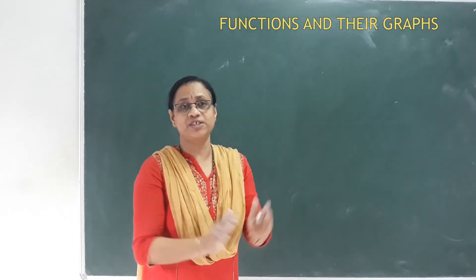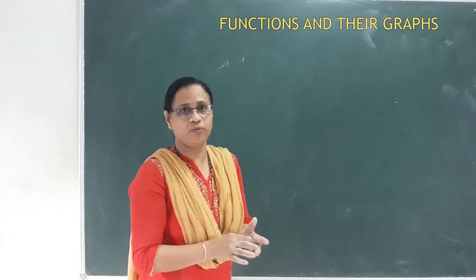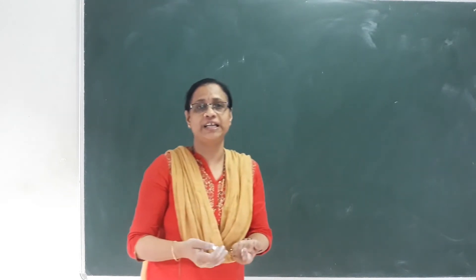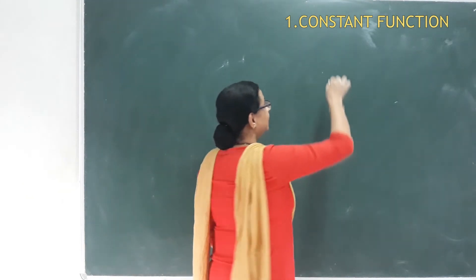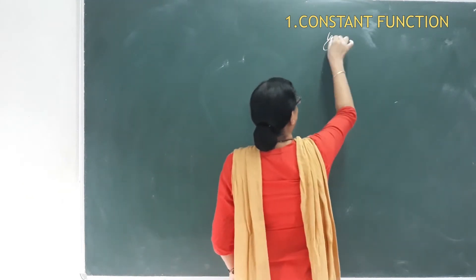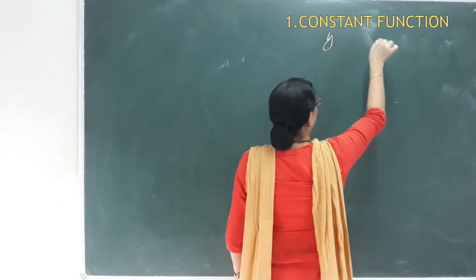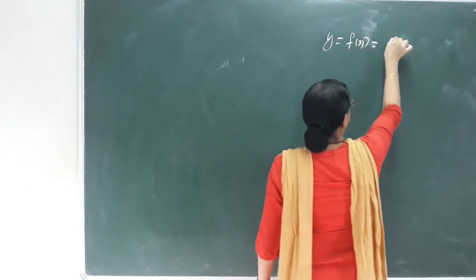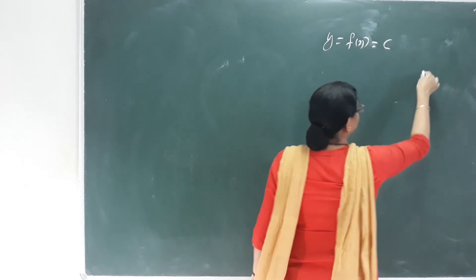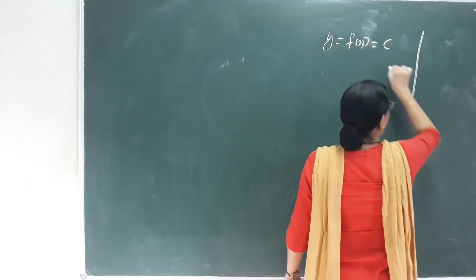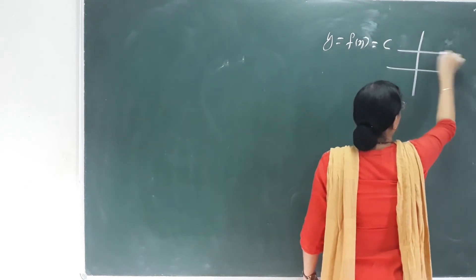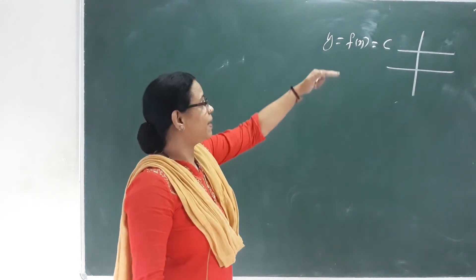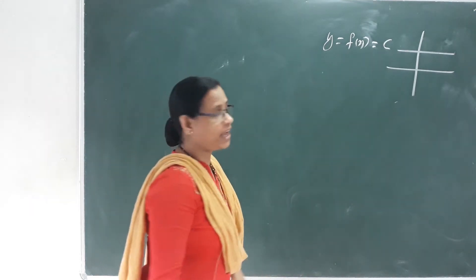Now we will learn a few functions and their graphs. The first function is the constant function. The real function f from R to R is y = f(x) = c. This is a constant function, and its graph is a line parallel to the x-axis.